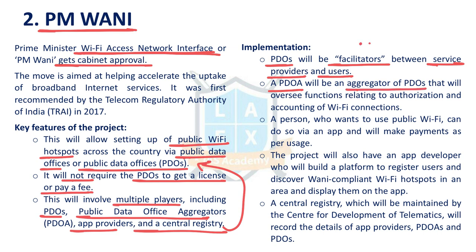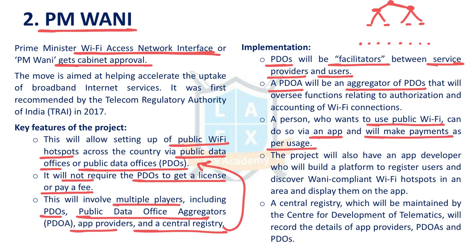Users of public internet connect through service providers, and each service provider takes permission from a PDO. All PDOs fall under the PDO aggregator. A person who wants to use public Wi-Fi can do so via an app and make payments as per usage. This project will also have an app developer component.